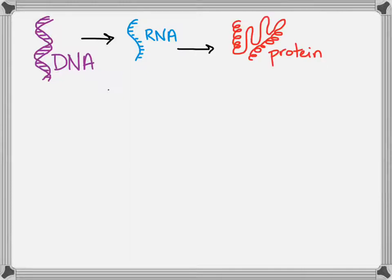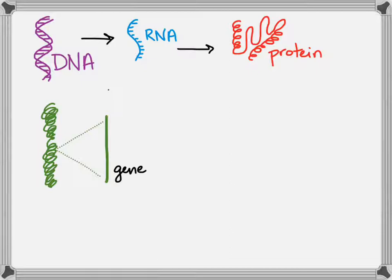We have DNA in the form of a chromosome, and all along that DNA are segments called genes. But when we're thinking about the central dogma and the proteins produced by these genes, these bits of DNA, how is that gene expression controlled? What determines if a gene is expressed and made into RNA and a protein or not?